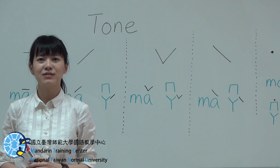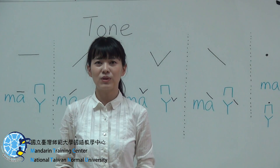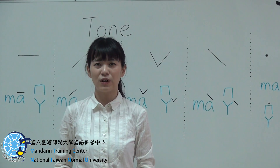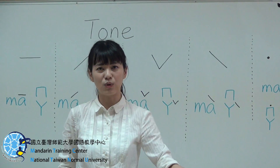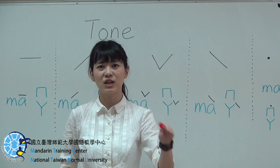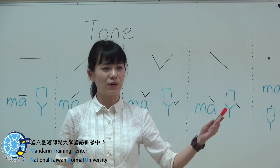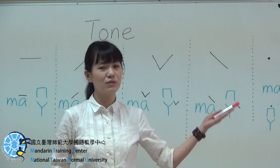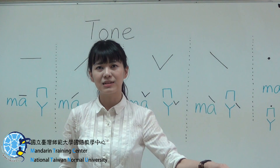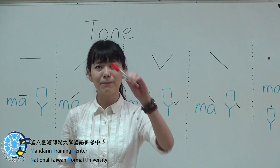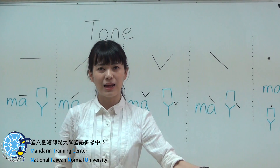The fourth tone is a firm and falling tone — like what we say 'nah' in English. For example: mà, mà, mà. Good.